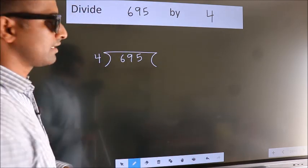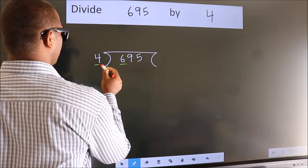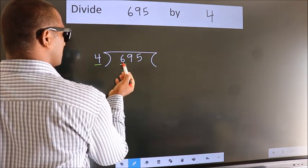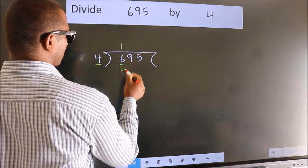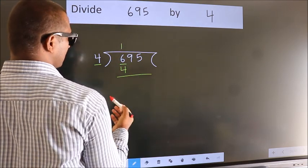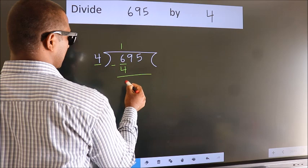Next, here we have 6, here 4. A number close to 6 in the 4 table is 4 once 4. Now we subtract and get 2.